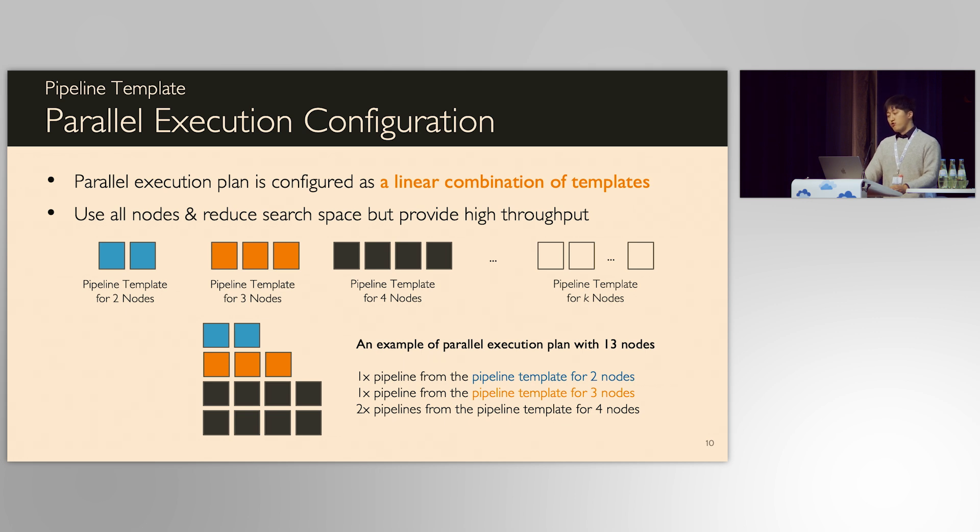More importantly, it drastically reduces the search space to find the best parallel execution plan. Considering such heterogeneous pipeline configuration, the search space is enormously large, while linear combination of predefined pipeline template is countable.